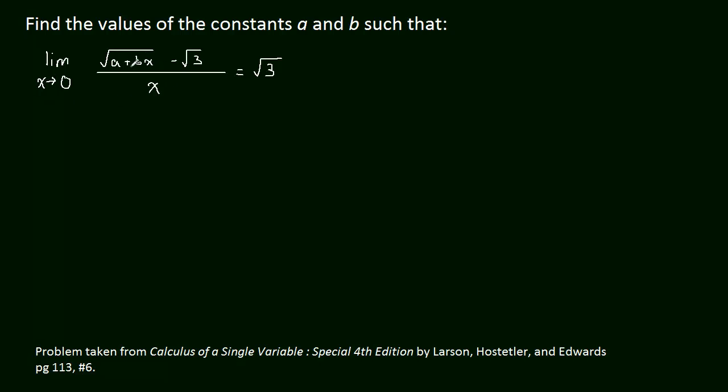And let's begin. So when I see a radical and a limit, I immediately think, let's rationalize. So I'm going to forget about the fact that this needs to equal radical 3 for now. I'm just going to try and simplify this limit. So we'll have the radical A plus BX minus radical 3 all over X. And now we have to multiply by the conjugate. So let's do that. So this will be radical A plus BX plus radical 3, all over that same exact thing there. So radical A plus BX plus radical 3.